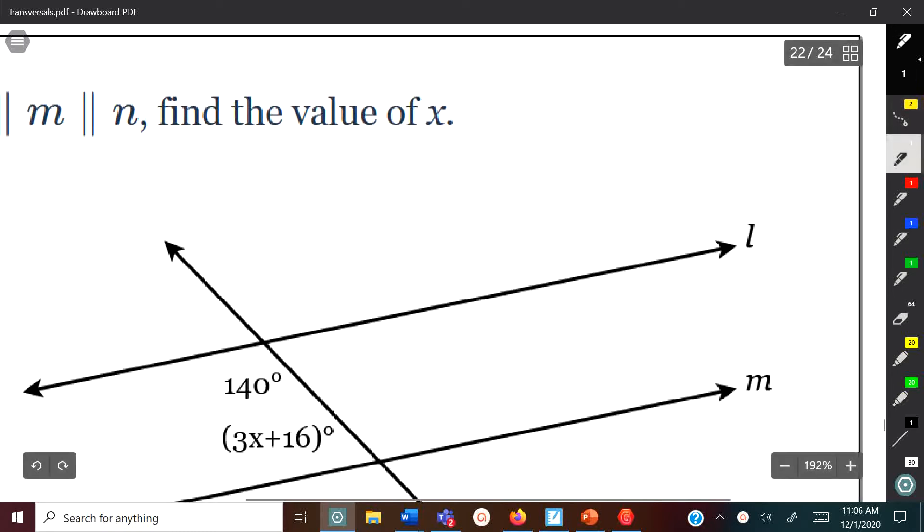We're going to add them together and set them equal to 180. All we want to do is find the value of x. We're going to take 140, add it with 3x plus 16, and set it equal to 180. First thing I'm going to do is combine like terms. We're going to add those together and we get 156 plus 3x equals 180.